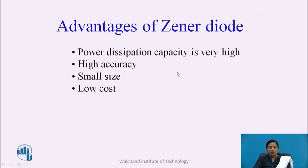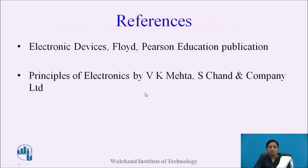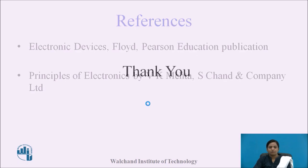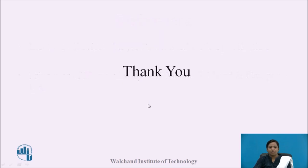Advantages of Zener diode: its power dissipation capacity is very high, its accuracy is high, it is small in size and low in cost. These are the references. Thank you.